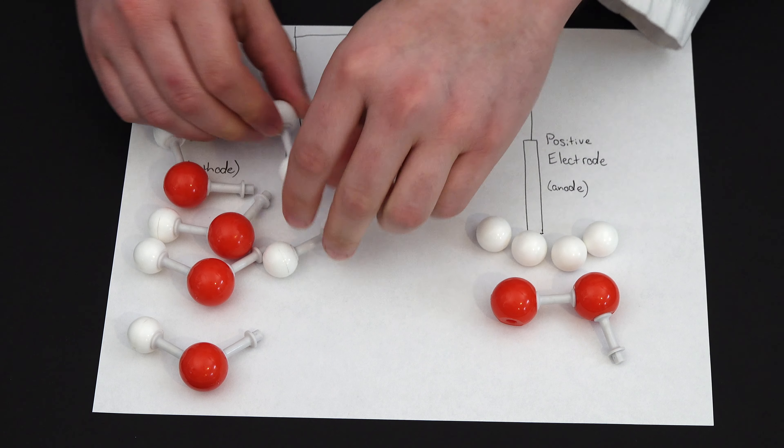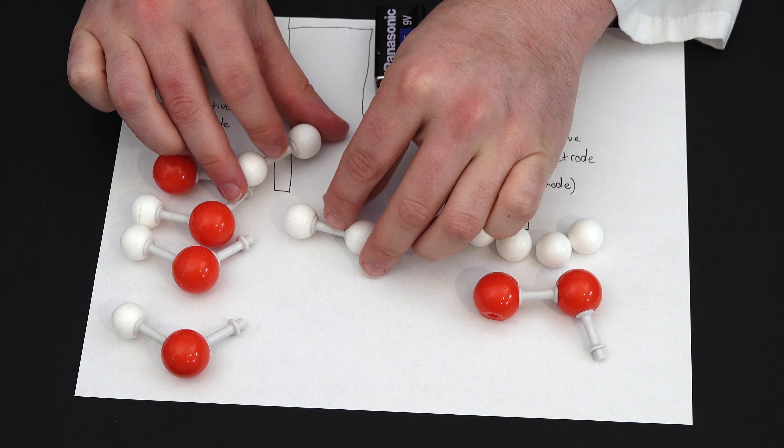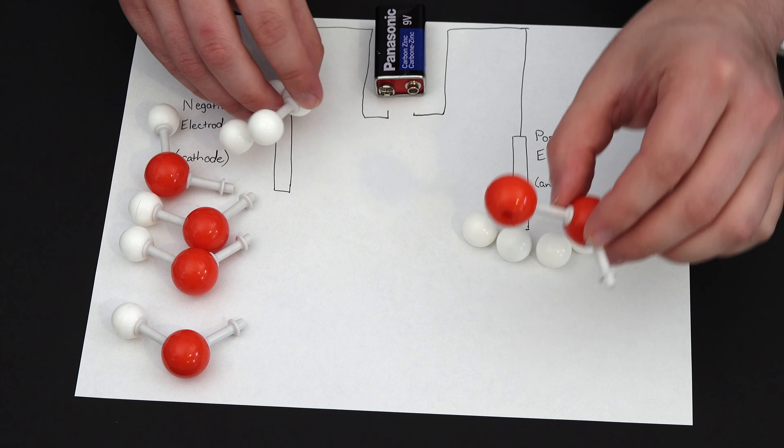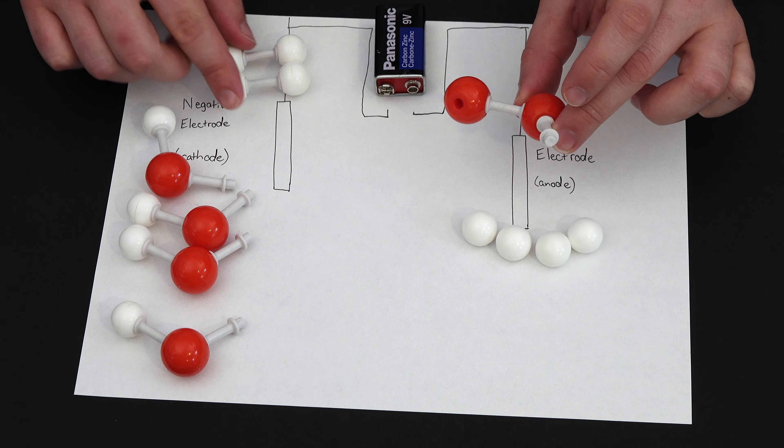And then these four hydrogen ions pick up the four electrons, to make H2, two molecules of H2 gas. So our end product here, we have one oxygen molecule, and two hydrogen molecules.